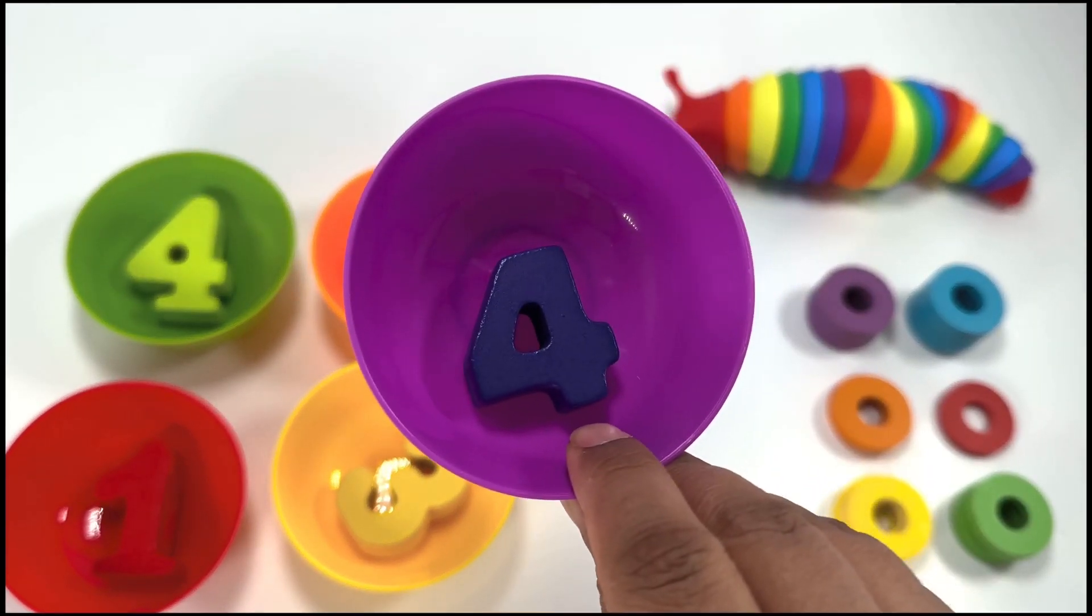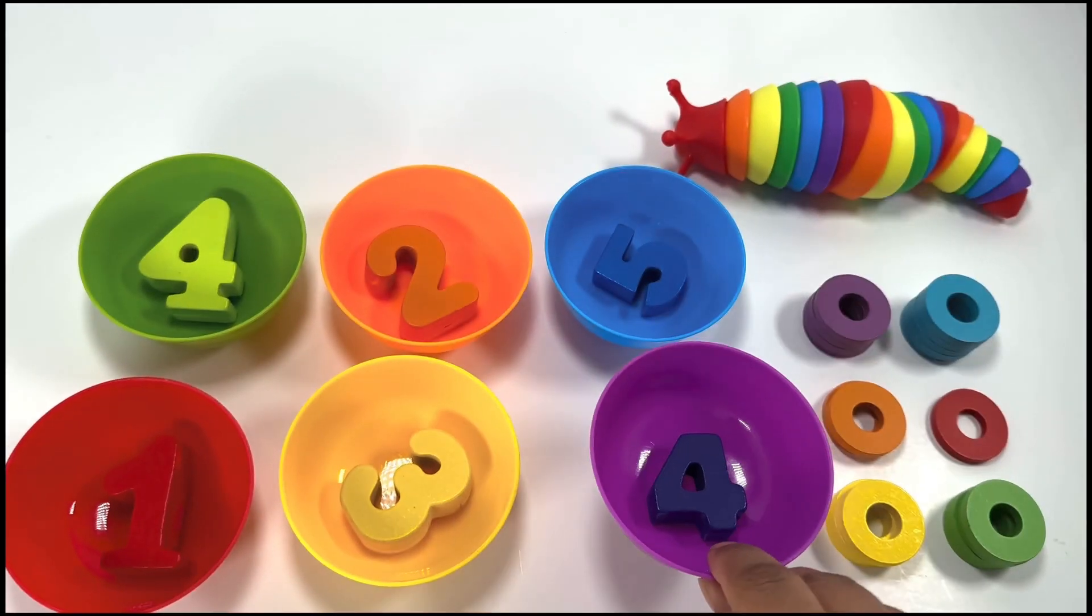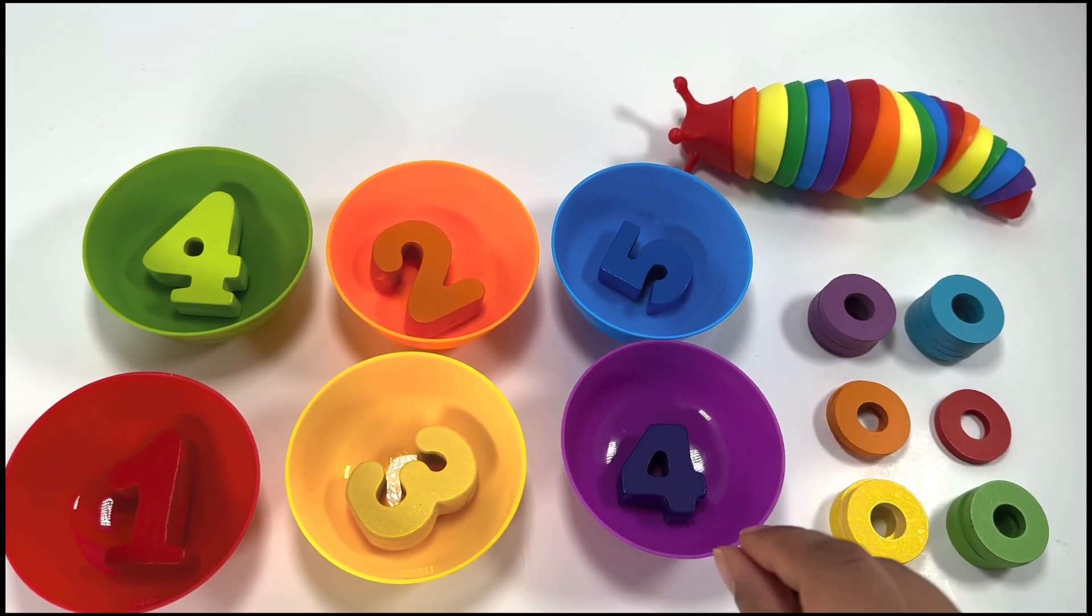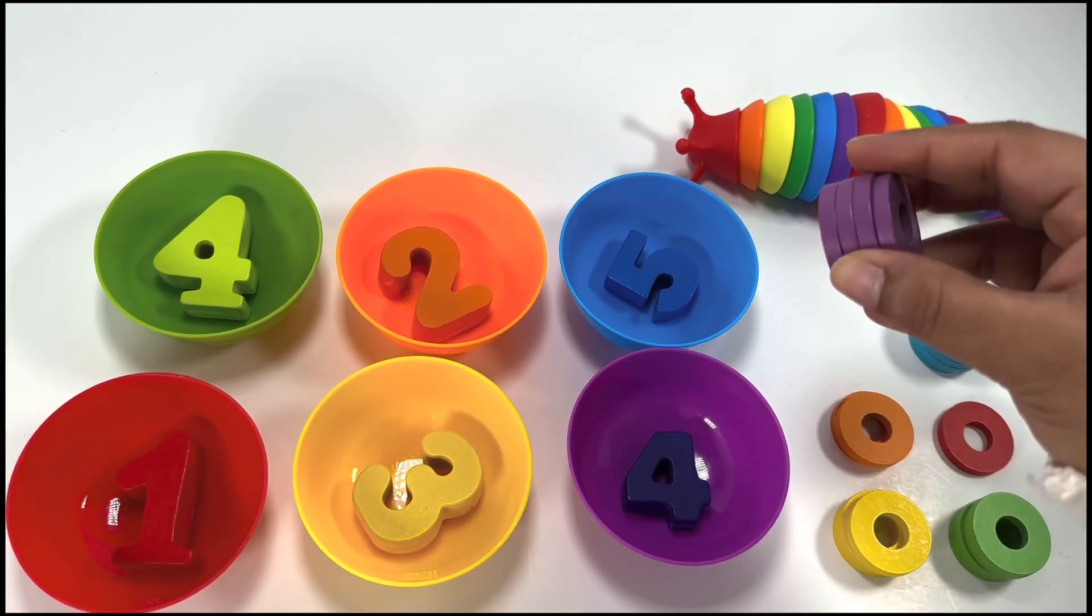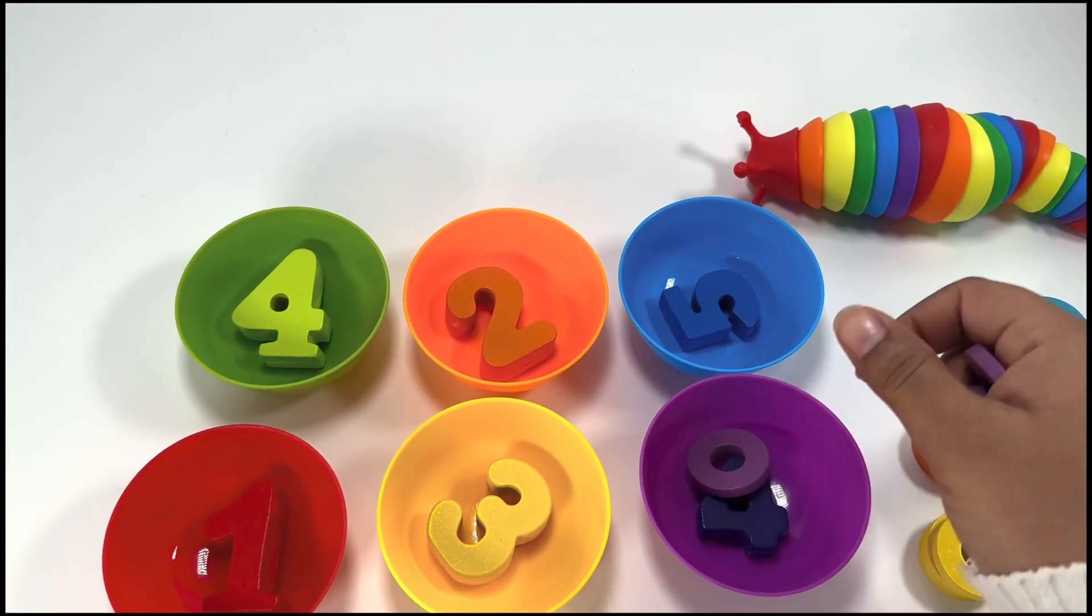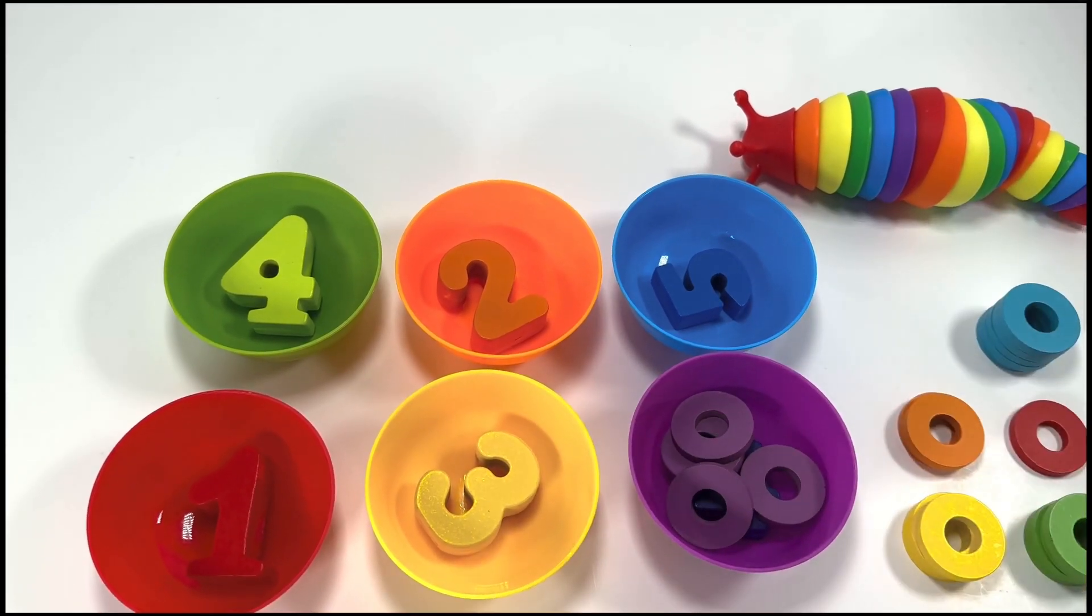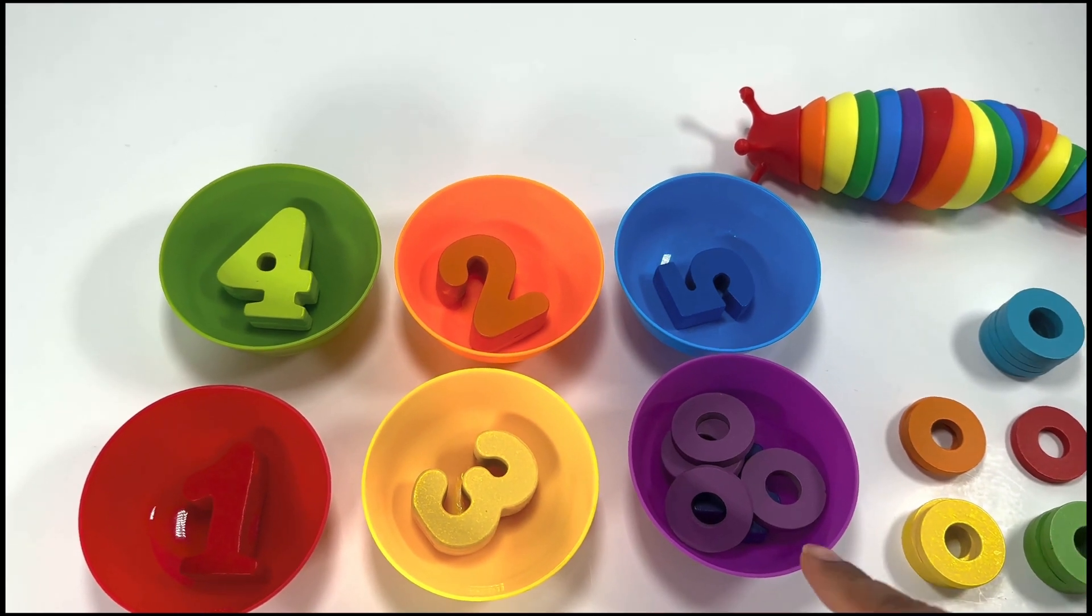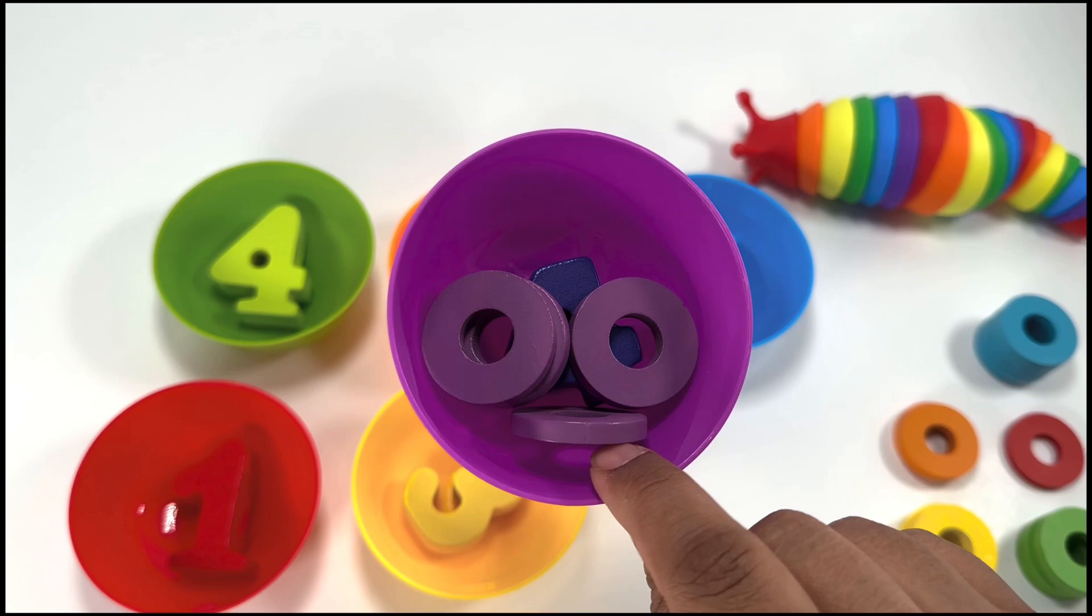What number do you see? Yes, you're right. It's number four. Number four. Let's see how many rings do we have here. One, two, three, four. We put four rings in the number four purple bowl.